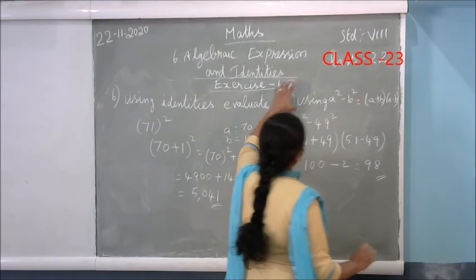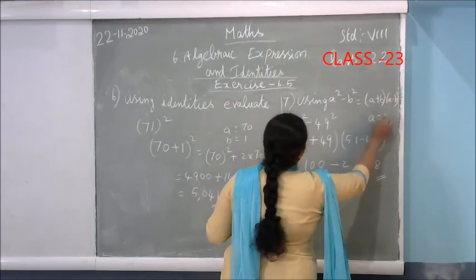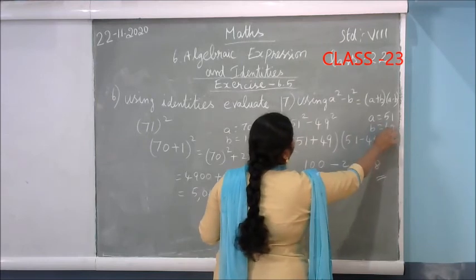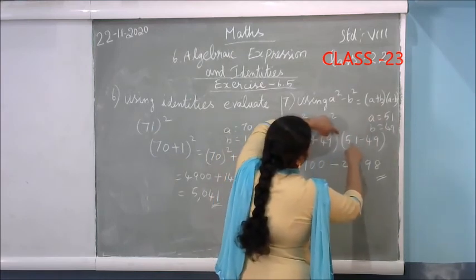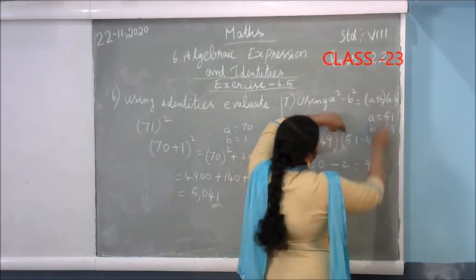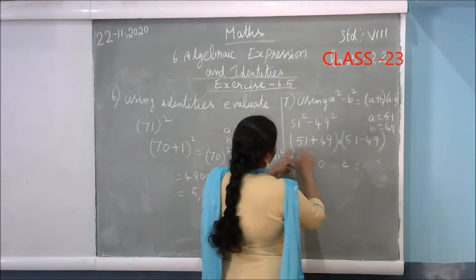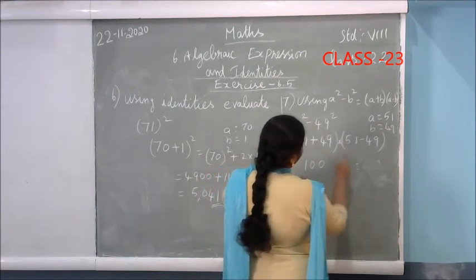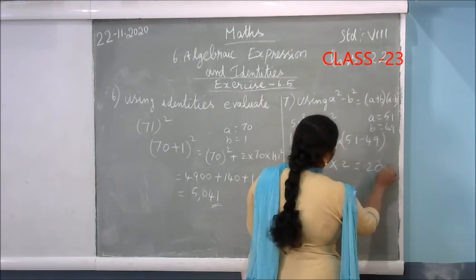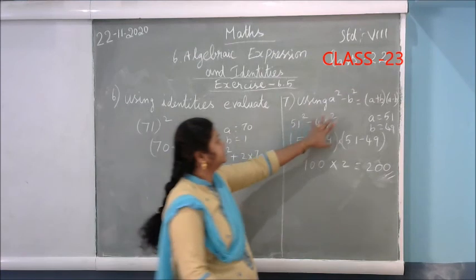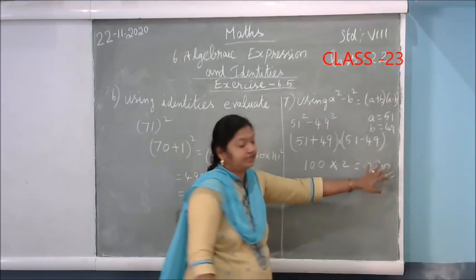Using the third identity (A+B)(A-B) = A²-B²: for 51×49, write as (51)(49) where A=51, B=49. So (51+49)×(51-49) = 100×2 = 200. Simplify both: 51+49=100 and 51-49=2, so 100×2 = 200.